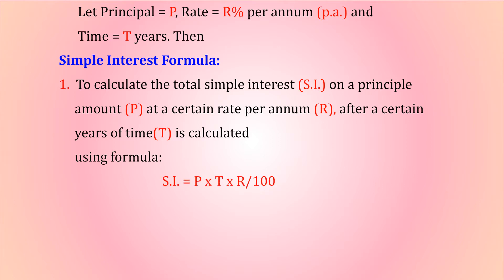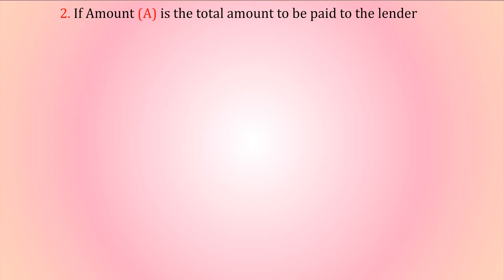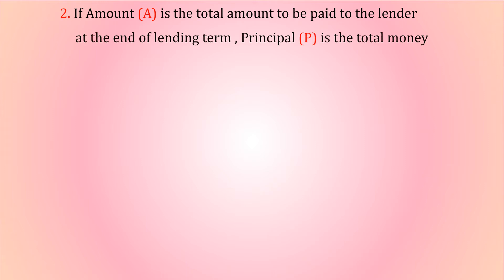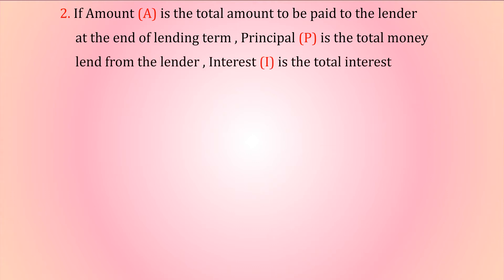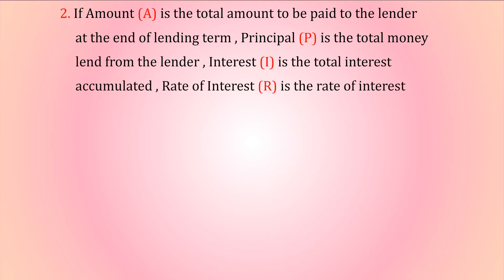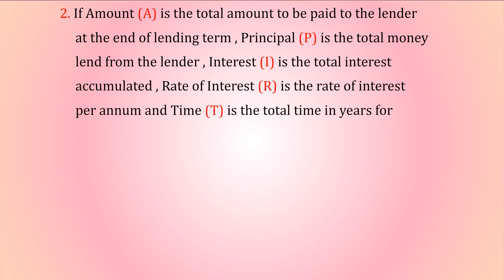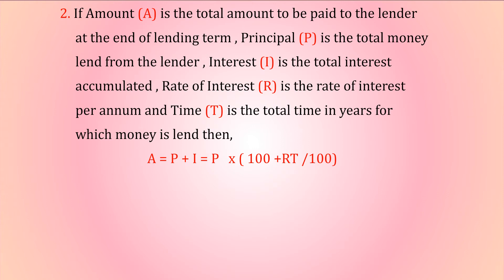The formula to calculate total simple interest S.I. on a principal amount P at a certain rate per annum R after T years is: S.I. = P × T × R / 100. Amount A is the total amount to be paid to the lender at the end of the lending term. Principal P is the total money lent, interest I is the total interest accumulated, rate R is the rate of interest per annum, and time T is the total time in years.